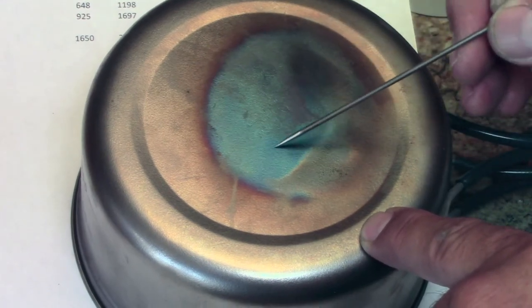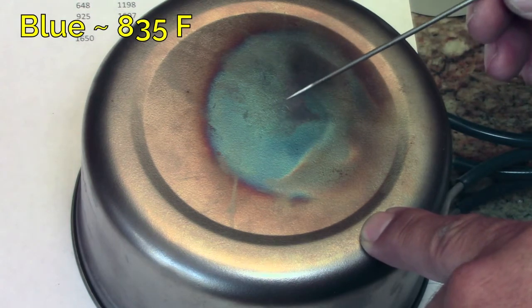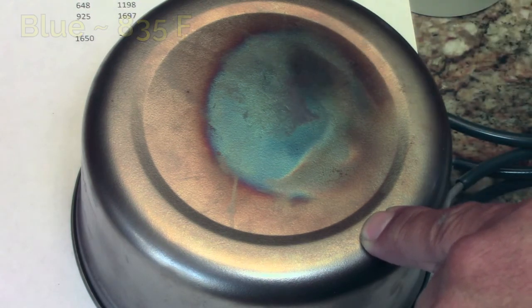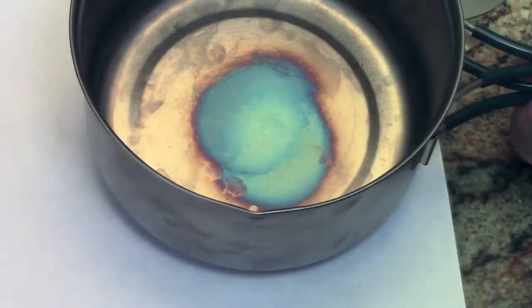And the blue zone in here, basically you've gotten up to 774 degrees. And by keeping it in that range, you can see it's got that nice uniform blue color.